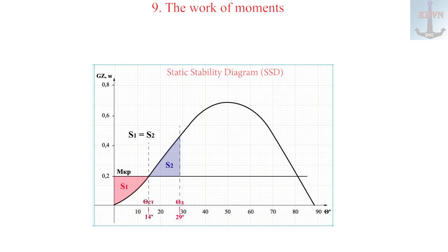The squall has passed and the wind is blowing with uniform force. The ship will get a permanent static list of 14 degrees. It can be seen from the animation that with the same moment value, the dynamic heel angle is twice the static one.